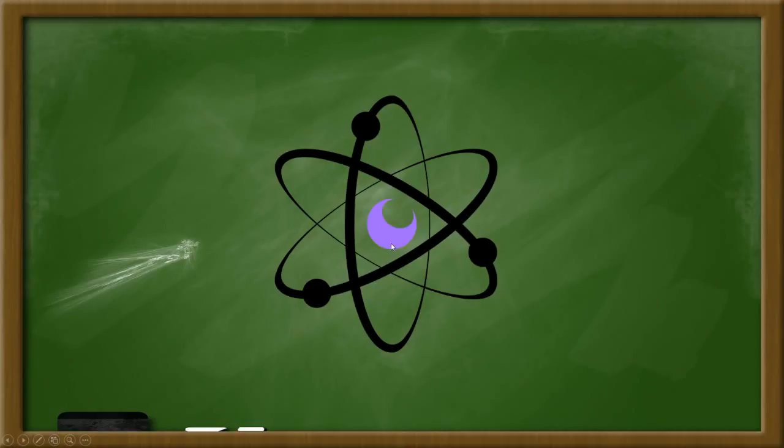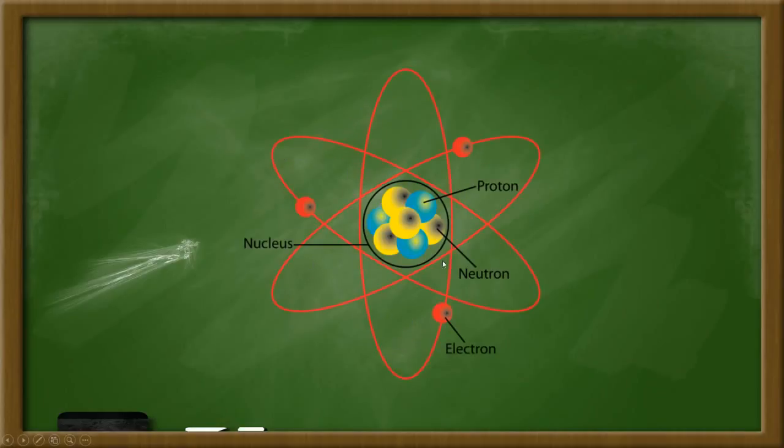And then they started introducing things like the nucleus, which is the central part of the atom, which is surrounded by orbiting electrons. Going into a bit more depth, the nucleus contains protons and neutrons, surrounded by electrons.